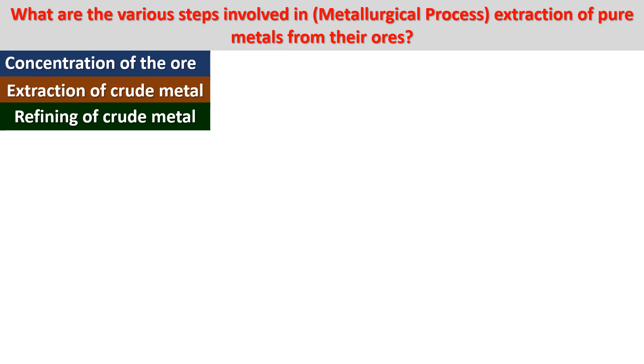Number 1: Concentration of the ore. Number 2: Extraction of crude metals. Number 3: Refining of crude metals. This is the metallurgical process.